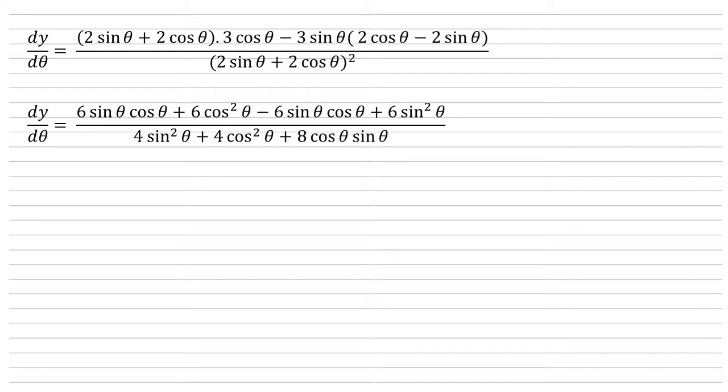The first thing to notice is that we've got positive 6 sine theta cos theta and a negative version on the top, so they can cancel each other out.